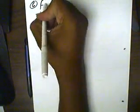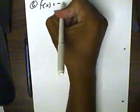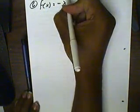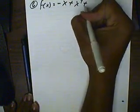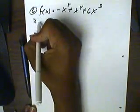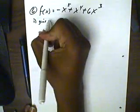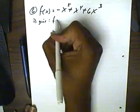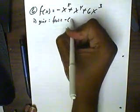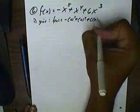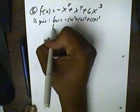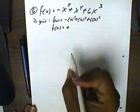Number six: we have f(x) equals negative x to the fifth power, plus x to the fourth power, plus 6x cubed. First, we're going to look for our y-intercept. To find the y-intercept, we make all our x's zero: negative zero to the fifth, plus zero to the fourth, plus 6 times zero to the third. This gives us zero for our y-intercept.